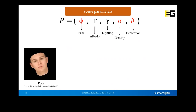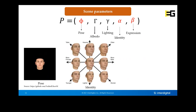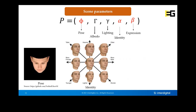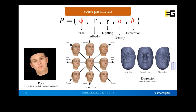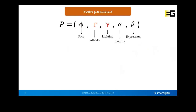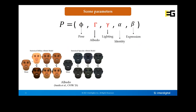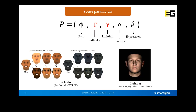The pose parameters control head rotation and translation. The identity coefficients define face morphology, age, gender, and so on. The expression coefficients control different face expressions. The albedo or skin color coefficients model various skin types using the albedo prior of Smith et al., modeling diffuse and specular terms. The light parameters define how light is perceived on the face.